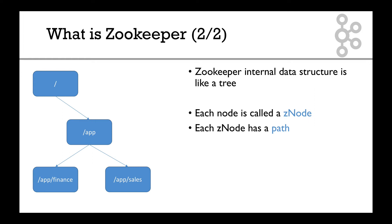Each node has a path. So in the blue boxes for example in the middle one the path is slash app and in bottom it's slash app slash finance. Okay so each Z node has a path. Each Z node can be persistent or ephemeral. So what's the difference? The persistent Z node is something that'll stay alive all the time. It's set in stone. Zookeeper will remember it all the time.